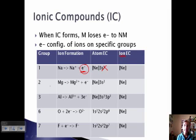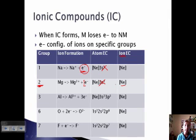Magnesium, or anything in group 2, forms plus 2 cations. It loses 2 electrons, so its atomic electron configuration is neon 3S2; because it loses those 2 electrons, it now becomes similar to neon. The atom doesn't become neon — its electron configuration is just similar to the noble gas. It's not changing its identity.